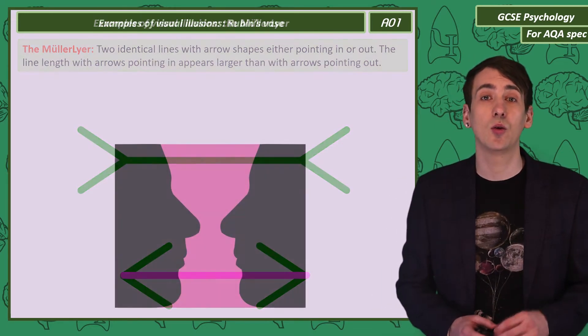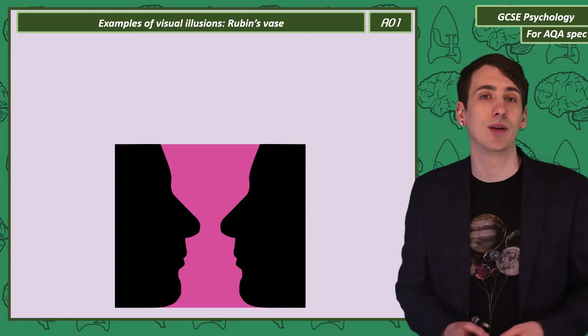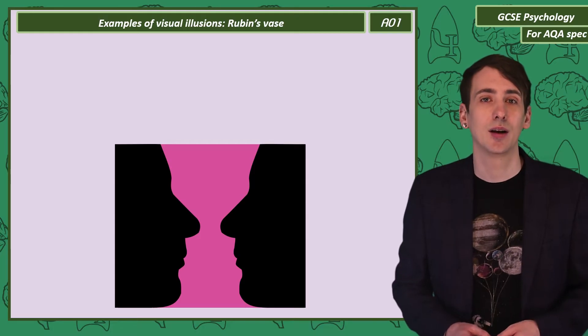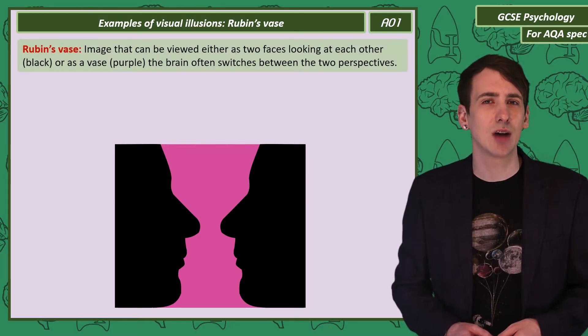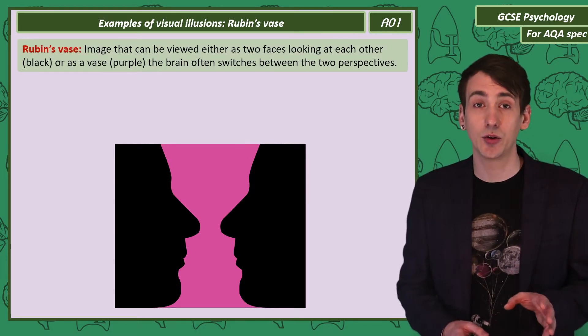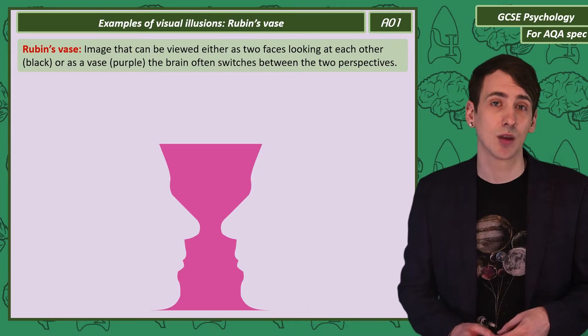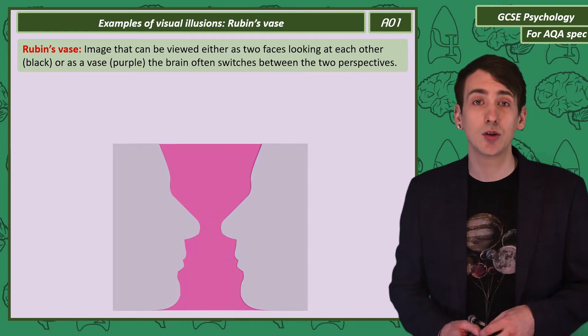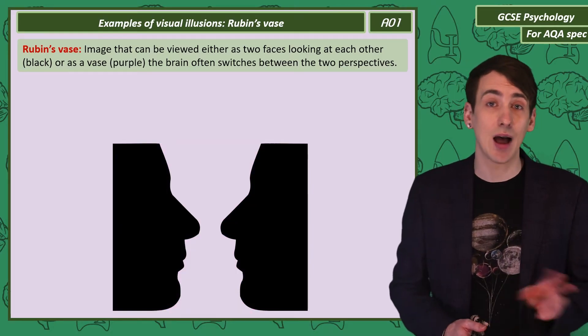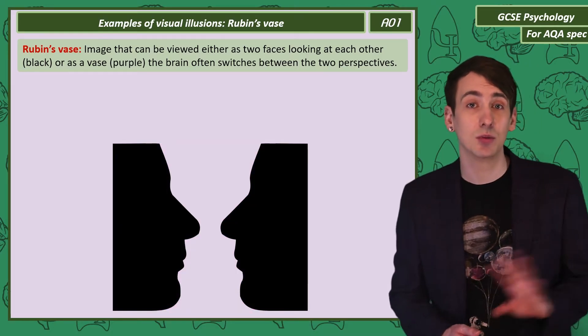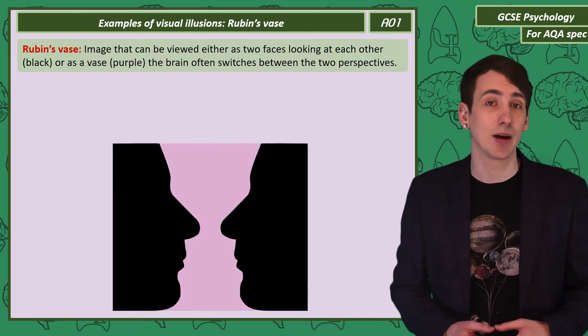This illusion is called the Rubin's Vase. The image should either look to you like a vase or two faces looking at each other. Your brain should be able to switch back and forth between each perspective.